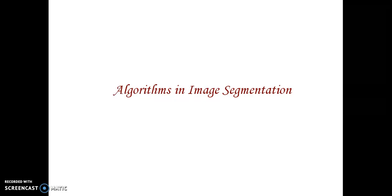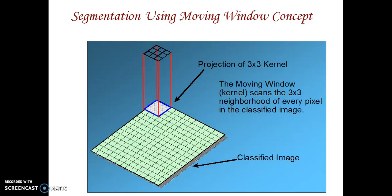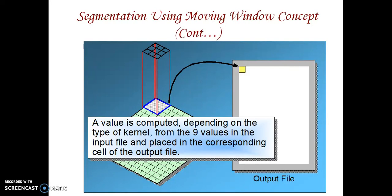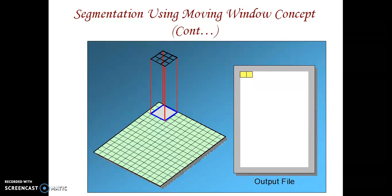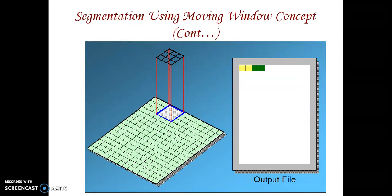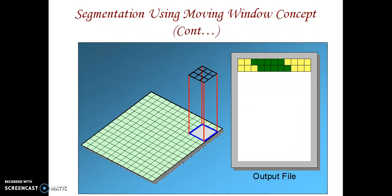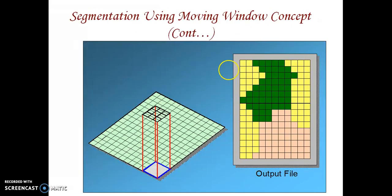What image segmentation algorithms are present in image processing? First, I am going to explain the moving window concept. I am going to use a 3×3 kernel and move through neighboring pixels. I am going to compute a value for each 3×3 area, fill it in an output file, and move till the end. Finally, I get a segmented output file. This is the concept of using a moving window.